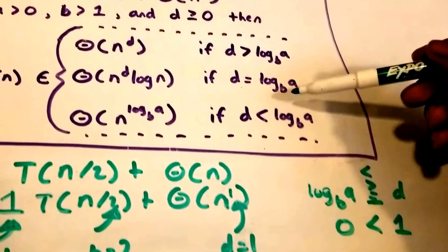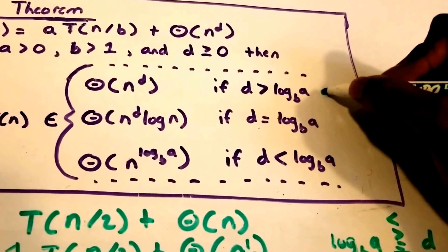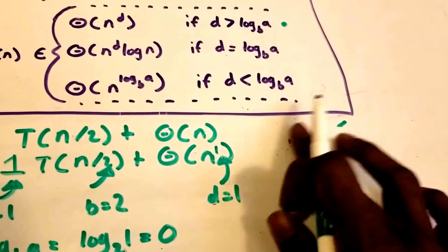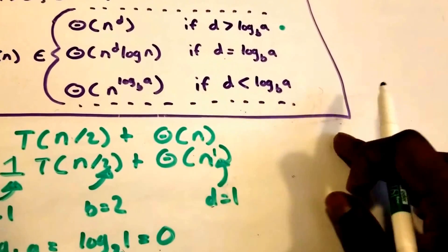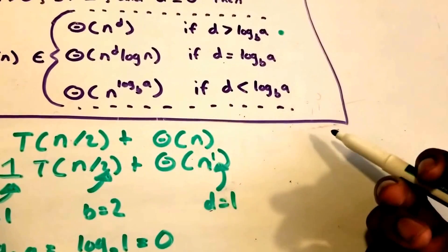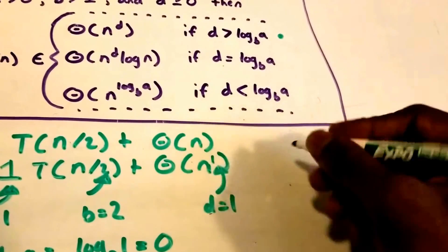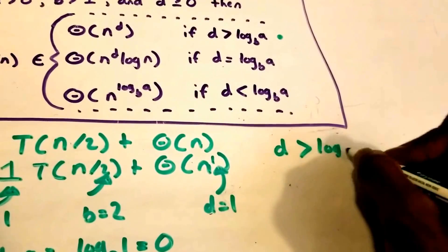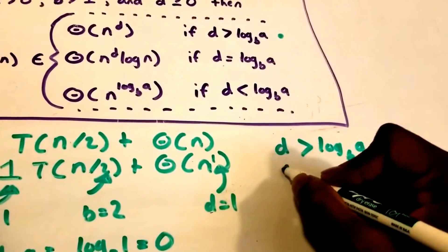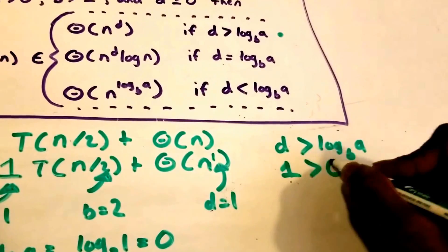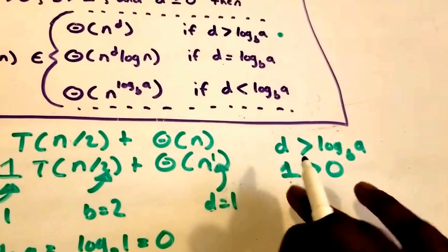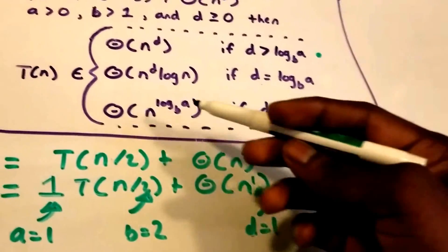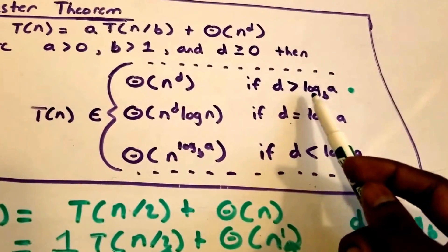The condition we use is d > log_b(a). I had written it with log_b(a) on the left and d on the right, but rewriting it: d > log_b(a), and our d = 1, which is still greater than 0. So this confirms which case to use.